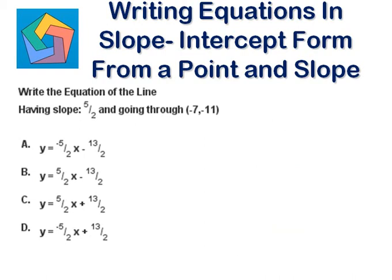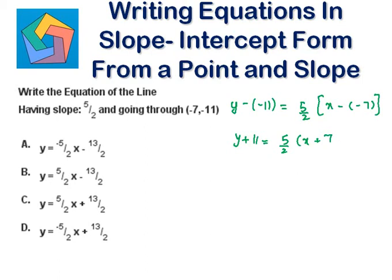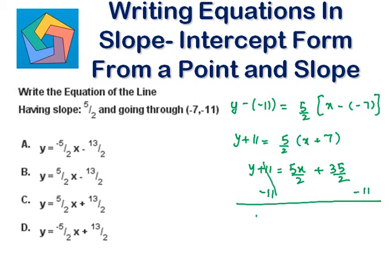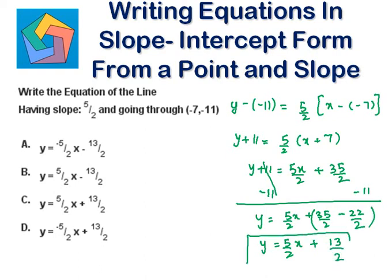Next problem: write the equation of the line having slope 5/2 and going through (-7, -11). So y minus minus 11 equals 5/2 times x minus 7, which gives y plus 11 equals 5/2 times (x plus 7). Distributing: y plus 11 equals 5x/2 plus 35/2. Subtracting 11 — which is 22/2 — from both sides: y equals 5/2x plus 13/2, which is the answer in part C.